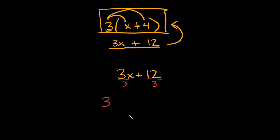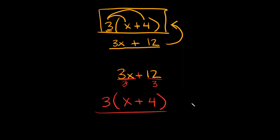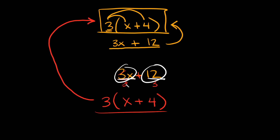If we pull out a 3 and draw a set of parentheses, we can simplify each fraction. Here, 3x divided by 3 equals just x, because the 3's cancel out. And 12 divided by 3 is equal to 4. Since we're adding, you bring the plus sign straight down. So your factored answer is 3 times the quantity x plus 4. As you can see, we got back exactly to where we started. The key to factoring lies in figuring out what number divides evenly into both terms.